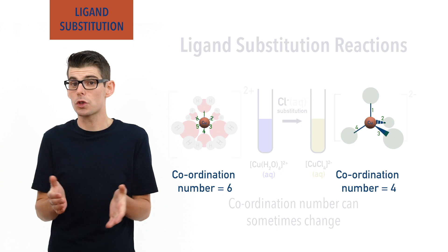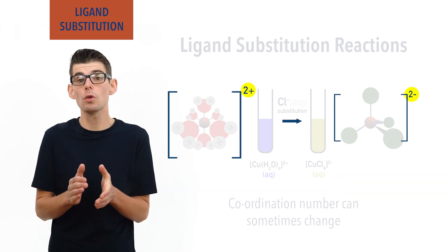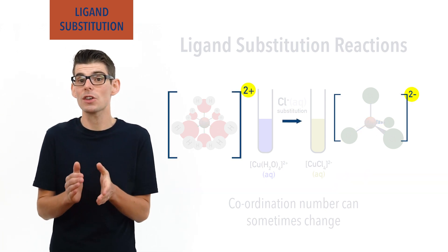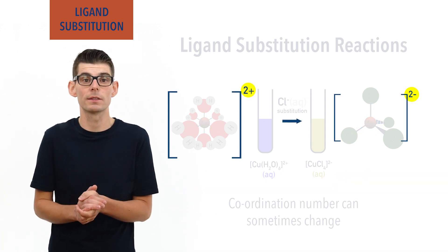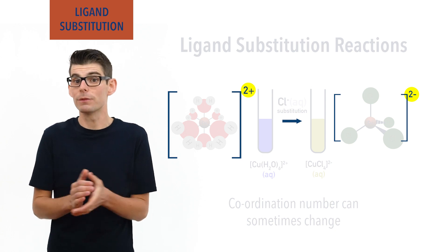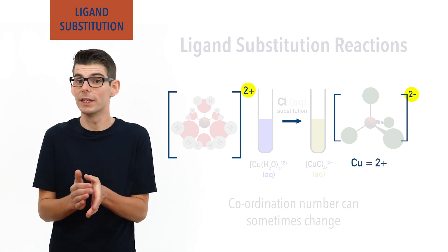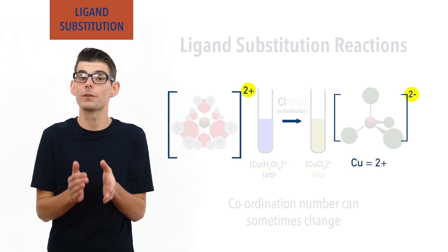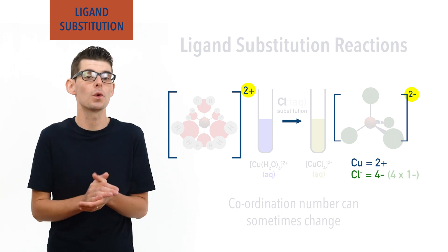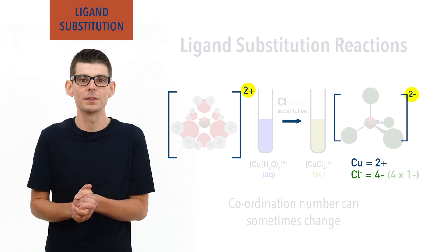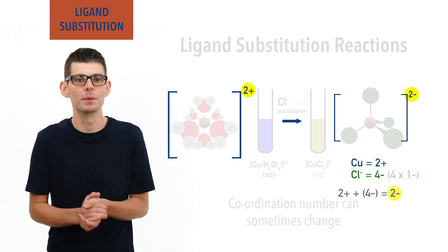The overall charge has also changed, as chloride ions each have a negative charge of 1 minus, meaning the 2 plus charge from the copper ion in the complex is offset by the 4 minus charge from the 4 chloride ions, giving 2 minus overall.